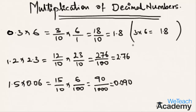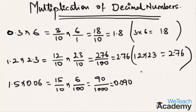The total digits after decimal points are 2, so in the result the decimal point comes before two places from the left, giving 2.76. For the third example: 15 multiplied by 6 is 90. The number of digits after decimal points is three, so the decimal point comes before three places from the left, giving 0.090.